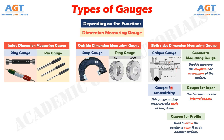The concentricity gauge is used to measure run out by revolving the cylinder or the loaded round on two pairs of bearings that are captured in anodized aluminum blocks. This gauge mainly measures the circle of the plane. The taper gauge is basically used to measure the internal tapers and looks like an internal gauge in the shape of a frustum of a cone. The profile gauge or contour gauge is a tool that is used to draw the profile or copy it onto another surface.